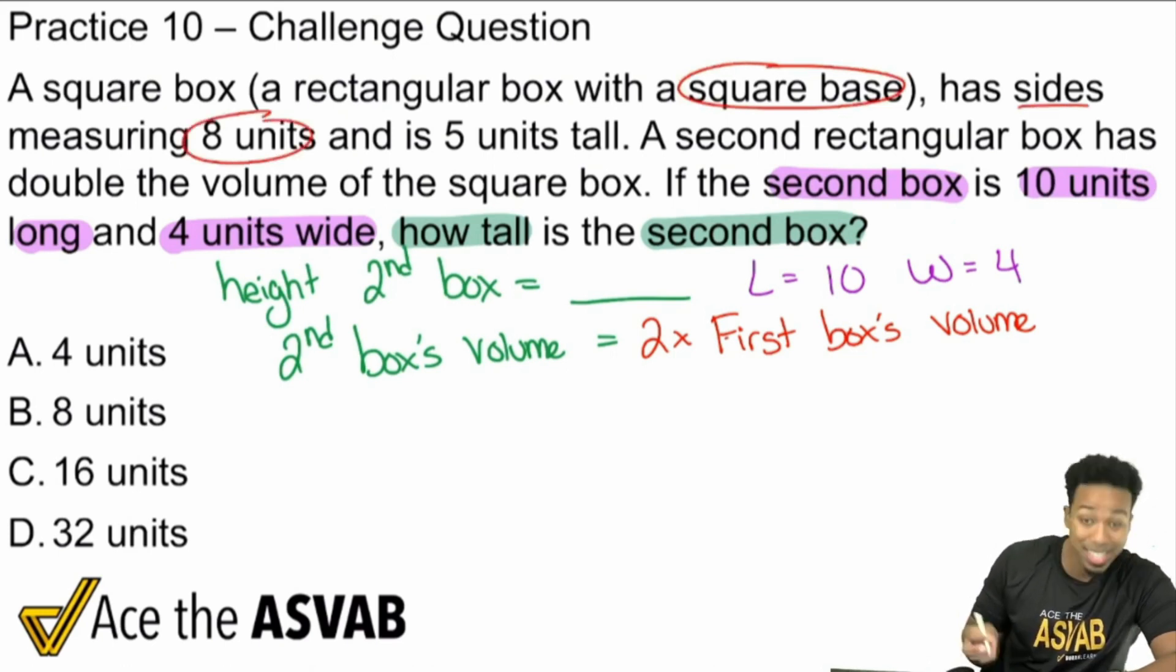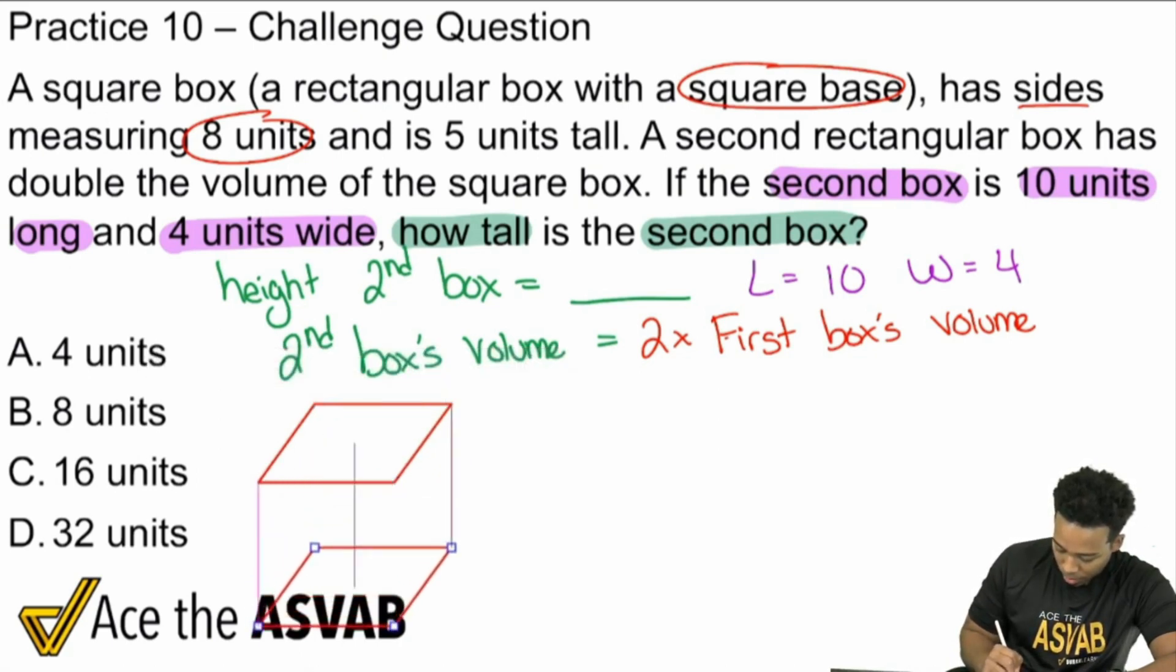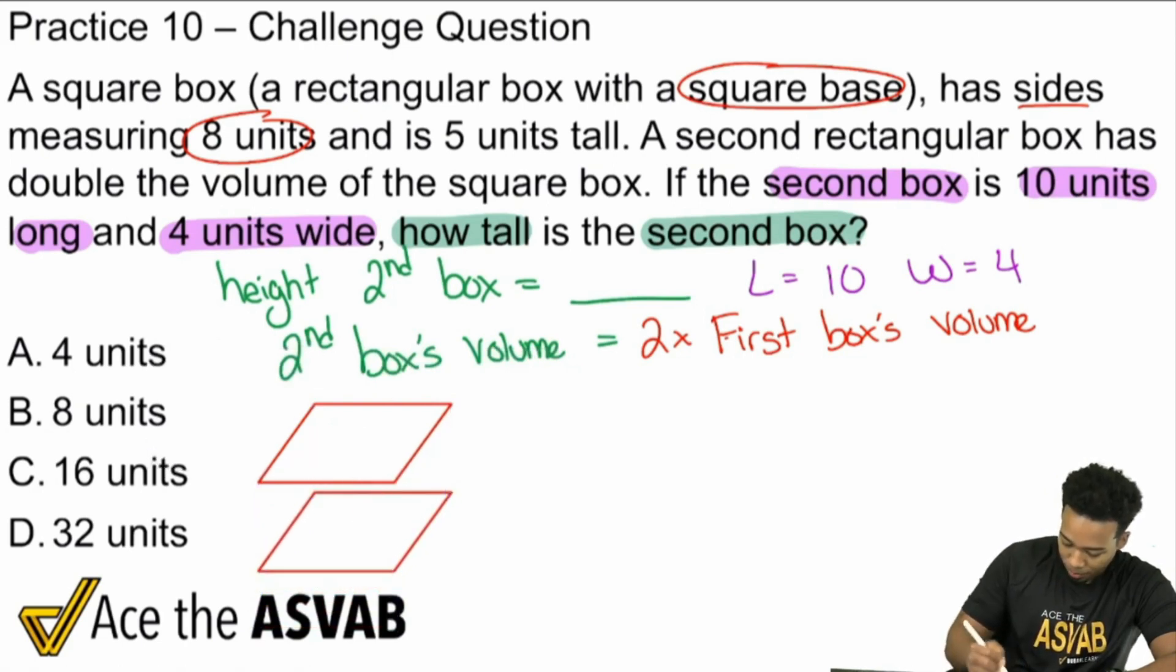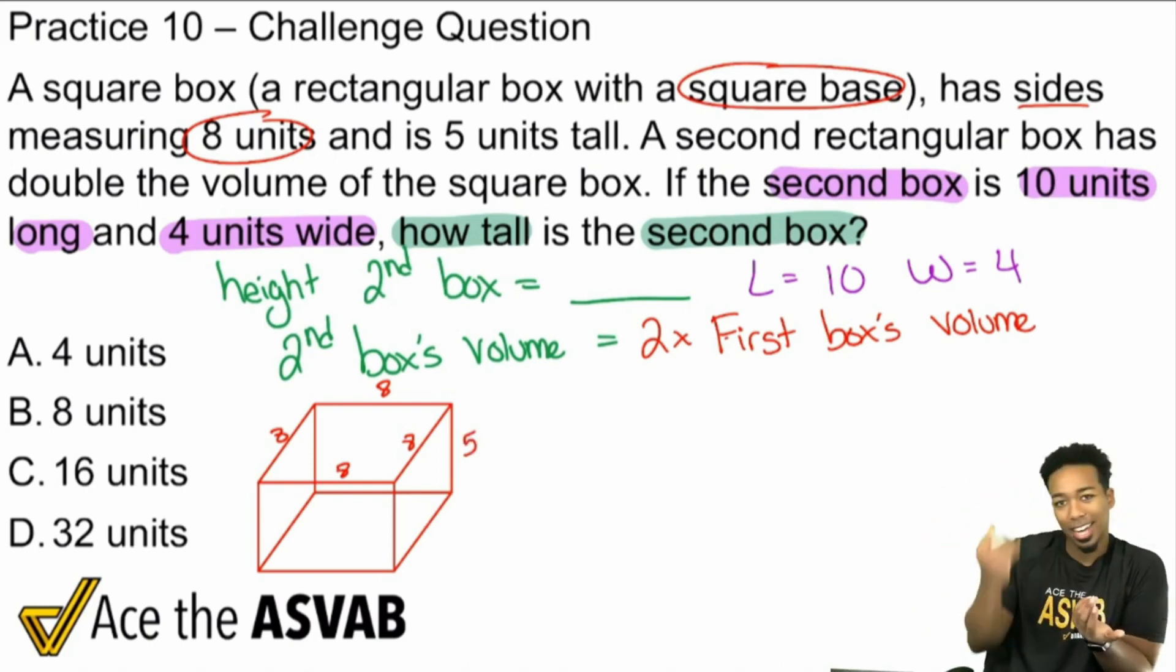So the sides are 8 units. So what that tells me is that we're going to have something along these lines. There we go. Worked itself out nice and easy. So the top and the bottom are going to be squares. And then it says it's only 5 units tall. So it's going to be a little shorter here. That's okay. And so boom, right there. So again, the sides are all going to be 8. But it's going to be 5 units tall. That's what that means. All that means, again, is that the length and the width are basically going to be 8 and the height is 5.